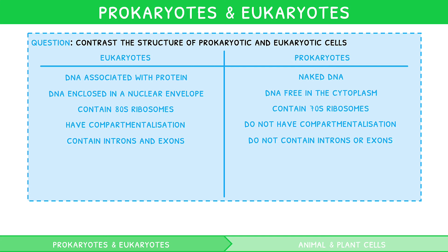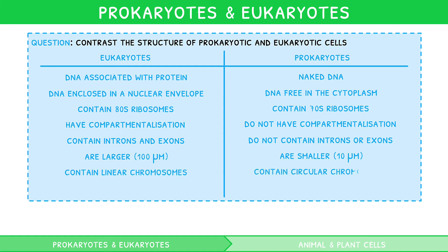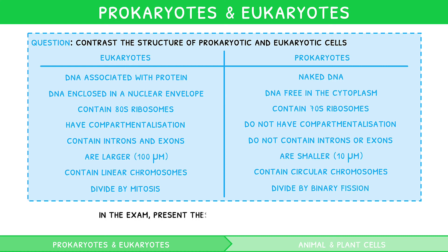Eukaryotes are larger, at 100 microns, whereas prokaryotes are smaller, at 10 microns. Eukaryotes contain linear chromosomes, whereas prokaryotes contain circular chromosomes. Finally, eukaryotes divide by mitosis, and prokaryotes divide by binary fission. In the exam, you would present these comparisons as full sentences.